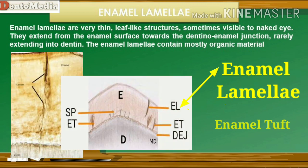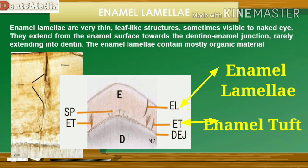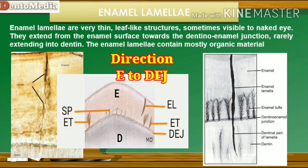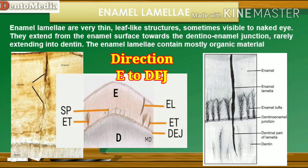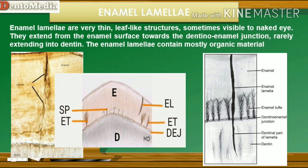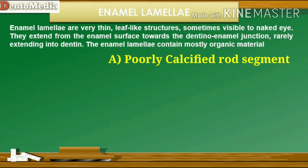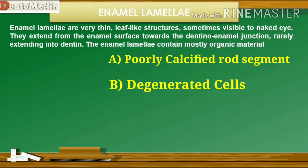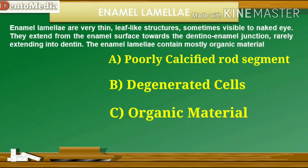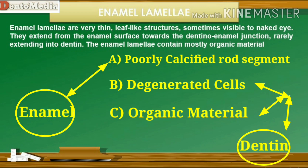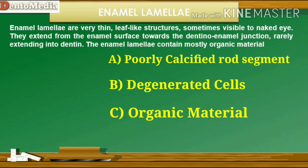Enamel lamellae are very thin, leaf-like structures, sometimes visible to the naked eye. They extend from the enamel surface towards the dentino-enamel junction, rarely extending into dentin. The enamel lamellae contain mostly organic material. Enamel lamellae can be differentiated into three types: Type A — lamellae composed of poorly calcified rod segments; Type B — lamellae composed of degenerated cells; Type C — lamellae arising in erupted teeth where the cracks are filled with organic matter and debris from saliva. Type A is restricted to enamel, while Type B and C may reach the dentin. They may form a pathway for entry of bacteria that may initiate caries.